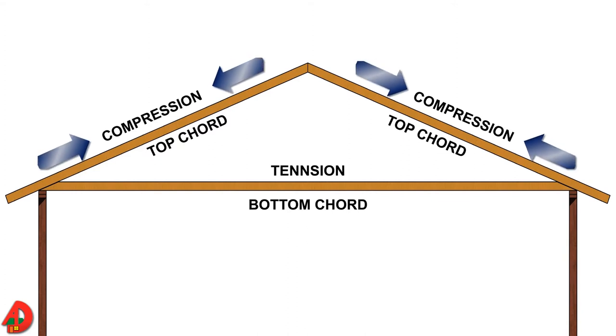The ends of two top cords are being pushed, so they are in a state of compression. Bottom cord holds lower ends of top cords from pushing out. Therefore, bottom cord is in a pulling state or tension. Because lower ends of top cords cannot pull apart, peak of truss cannot drop down.